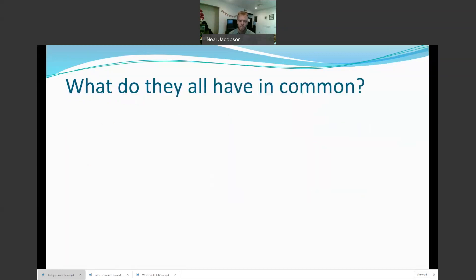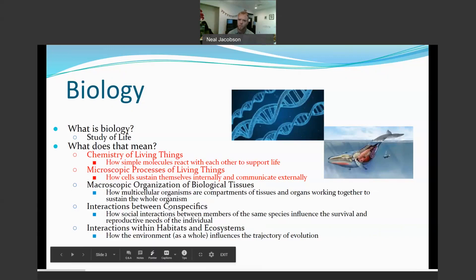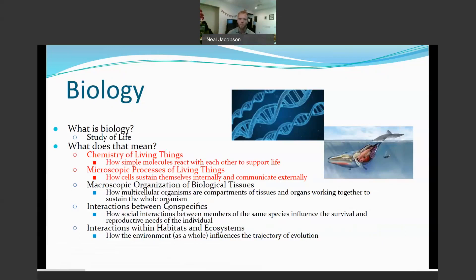We're going to look at two of those Russian dolls in this course. Primarily at the beginning of the course, we'll look at how basic molecular chemistry builds more complex organic molecules and how those organic molecules organize into cells. We won't look at tissue-to-organ organization, but we will zoom out and look at the organism in the population — population genetics — because you can't really understand how evolution works long-term unless you understand the dynamics of populations. We'll look at that stuff at the end of the semester.